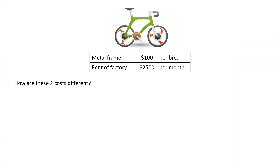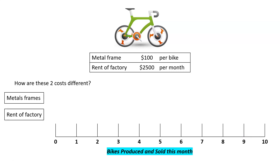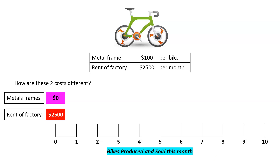Some of these costs will vary based on how many bikes we sell, and some will not. Let's look at two costs: the metal frame at $100 per bike, and the rent of the factory at $2,500 per month. For each bike we produce and sell this month, from zero all the way up to 10, how much are these costs? If we make zero bikes, the metal frame cost is zero — $100 per bike times zero bikes equals zero cost. The rent of the factory, though, we're going to have to pay that one regardless. Even if we don't make a single bike, it's going to be $2,500. If we make one bike, that's a metal frame cost of $100, but the rent will still stay at $2,500.